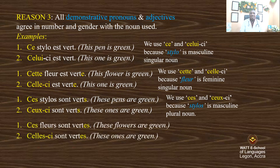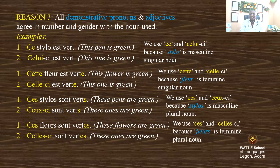'Ces fleurs sont vertes' — 'celles-ci sont vertes'. These flowers are green, these ones are green. We use 'ces' and the feminine plural demonstrative pronoun because flower is feminine plural.